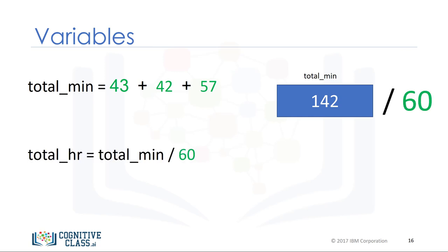We call the variable that contains the total number of hours, total_hr. We can obtain the total number of hours by dividing total_min by 60. The result is approximately 2.367 hours.